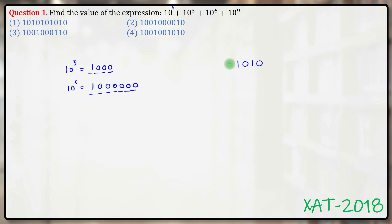10³ means 1 in the fourth place from the right. 10⁶ means 1 in the 7th place from the right. And likewise 10⁹ means 1 in the 10th place from the right. That's your answer. Answer option 4.